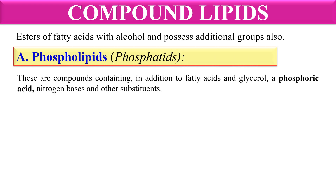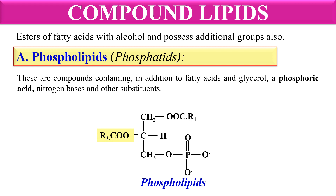The first category is the phospholipids or phosphatids. As the name indicates, they contain the phosphorus group — in addition to the fatty acid and glycerol molecule, they also contain the phosphoric acid group. Here you can clearly see the structure of a typical phospholipid: the glycerol molecule is attached at the first and second position with fatty acid, while at the third carbon the phosphoric acid is attached.